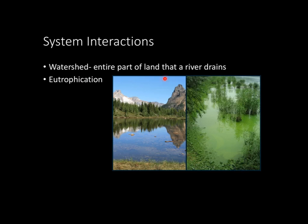Down here you can see what looks like a very healthy lake system, which it is. On the right, on the flip side of that, is a very unhealthy lake system, because eutrophication has clearly occurred, as you can see from all this algae on top. So basically the process of eutrophication goes like this: an influx of nutrients is added to a lake system — or a freshwater or saltwater system — but let's just talk about a lake system.